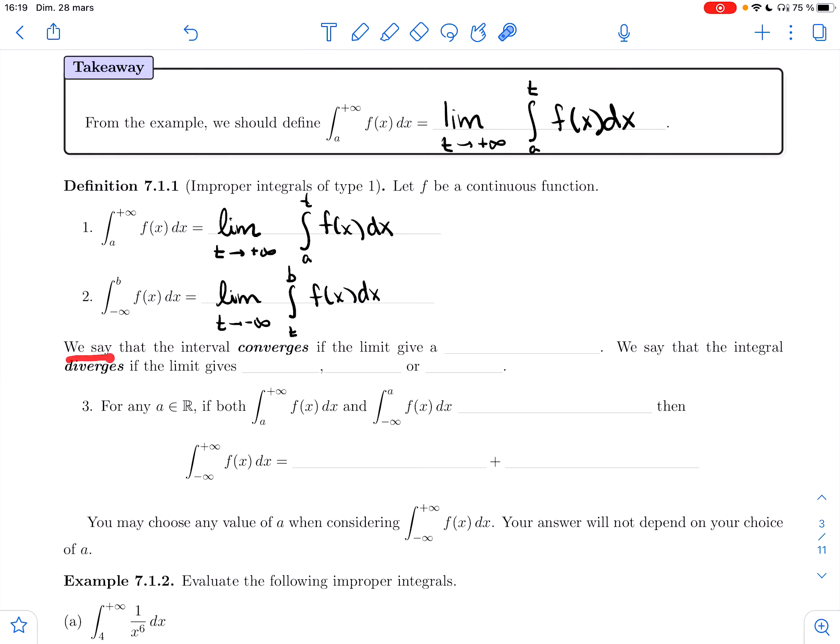We say that the integral converges if the limit gives a finite number, so a real number. We then say that the integral diverges if the limit gives anything else—if it's positive infinity, minus infinity, or if it does not exist.